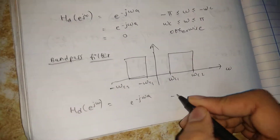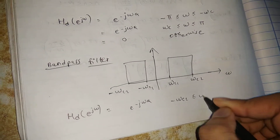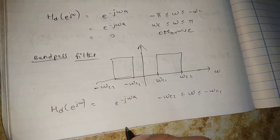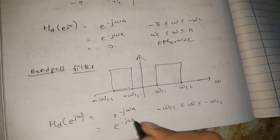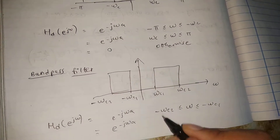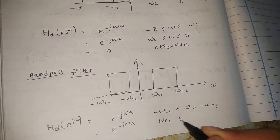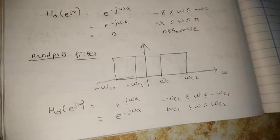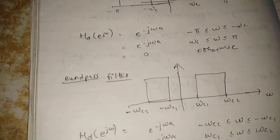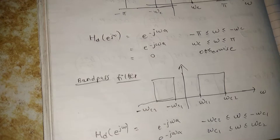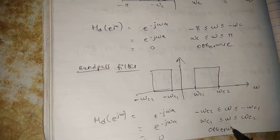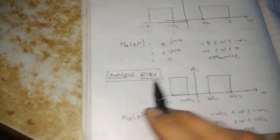The range is between minus omega C2 less than omega less than minus omega C1. Second range: e raised to minus j omega alpha, where omega C1 less than omega less than omega C2. Equals 0 otherwise. So this is the band pass filter.